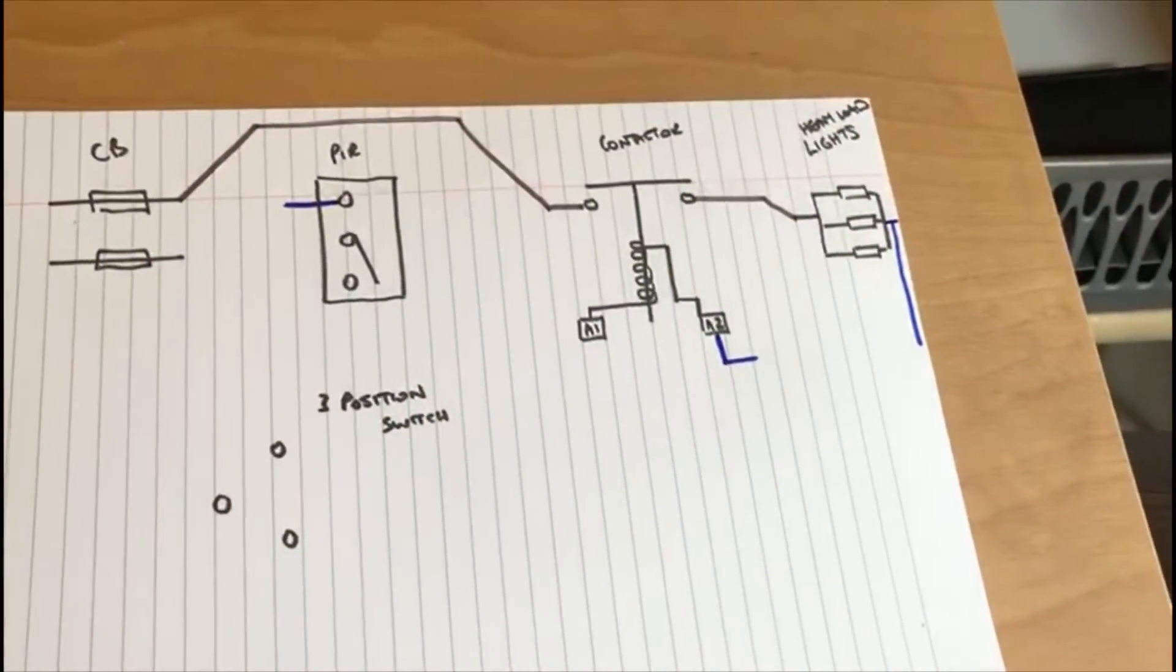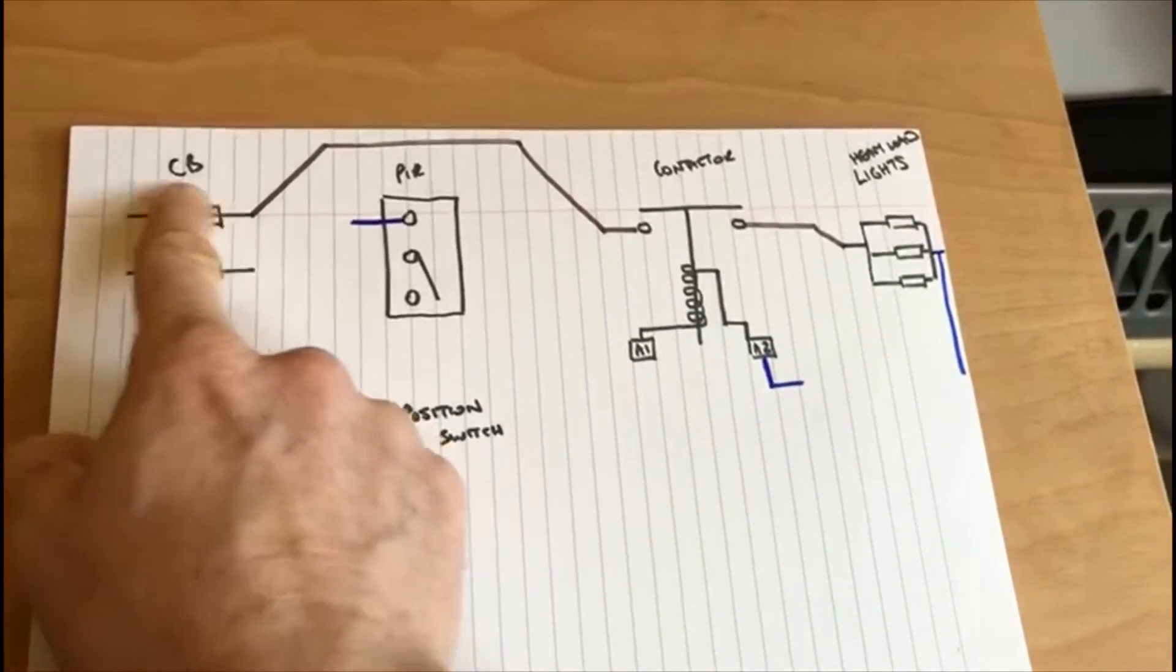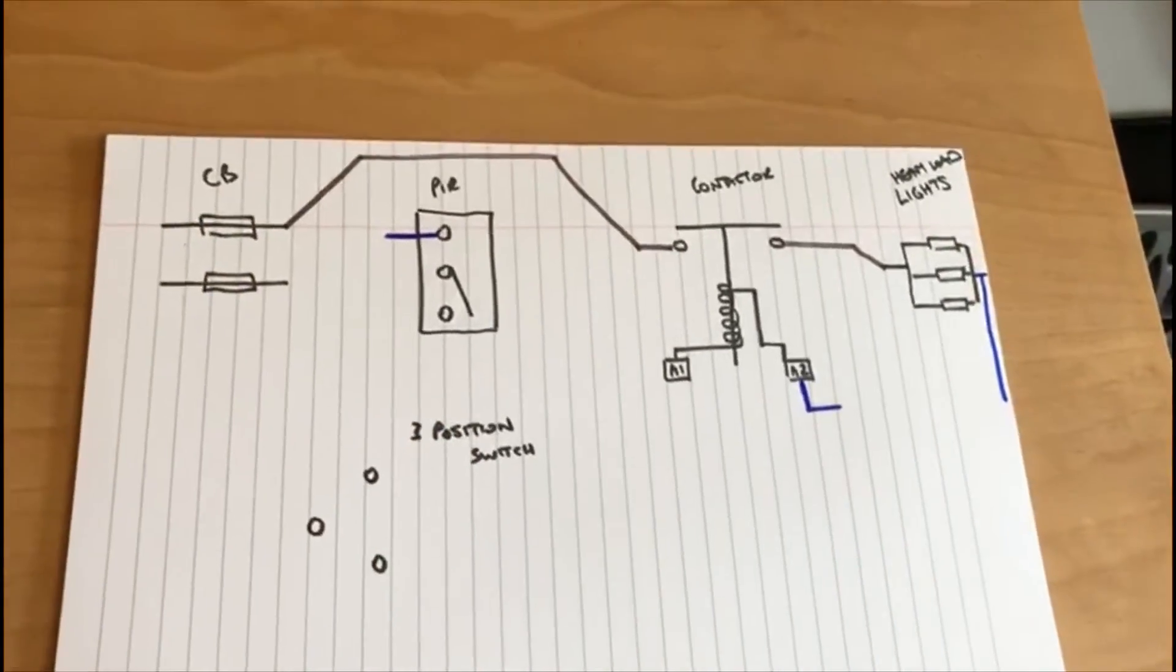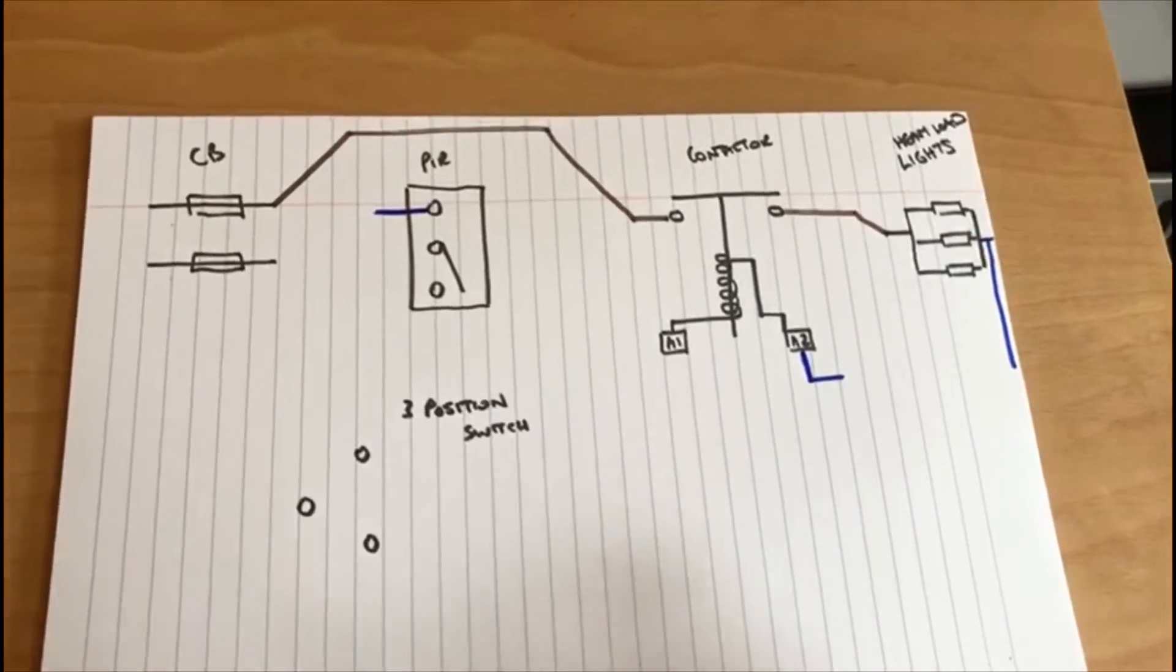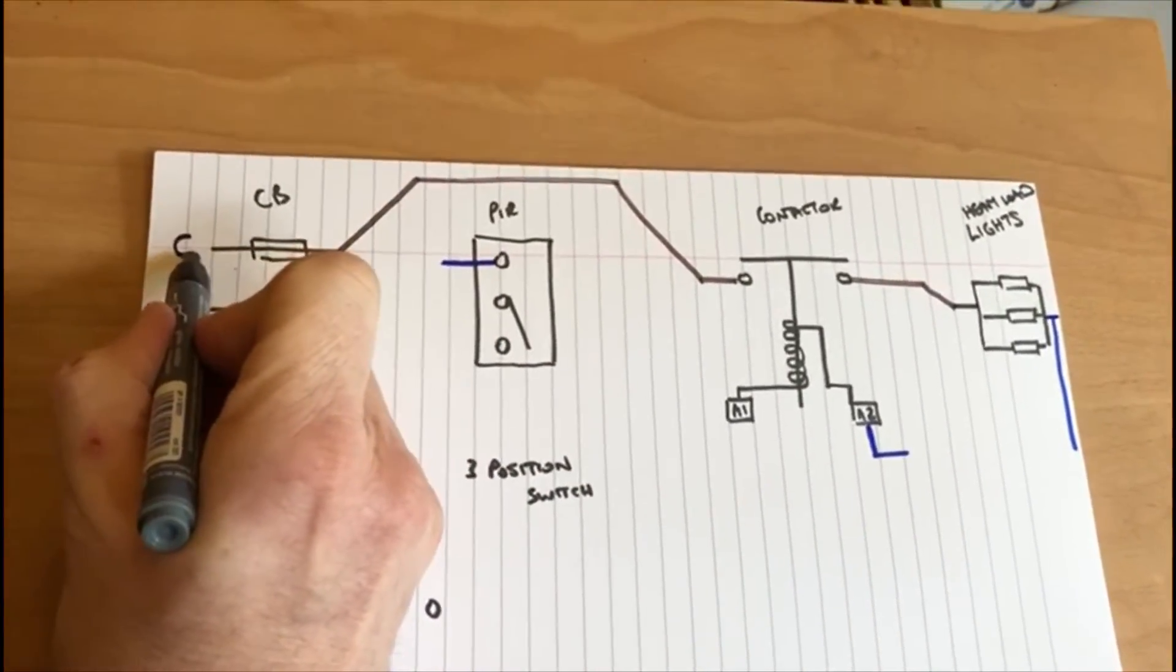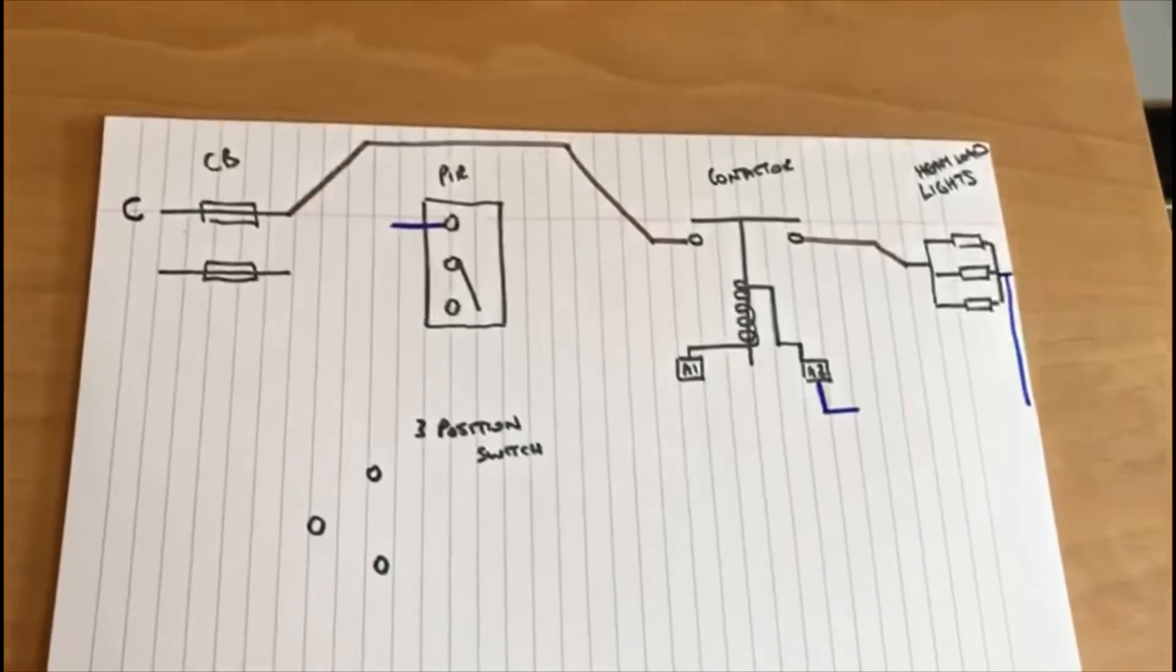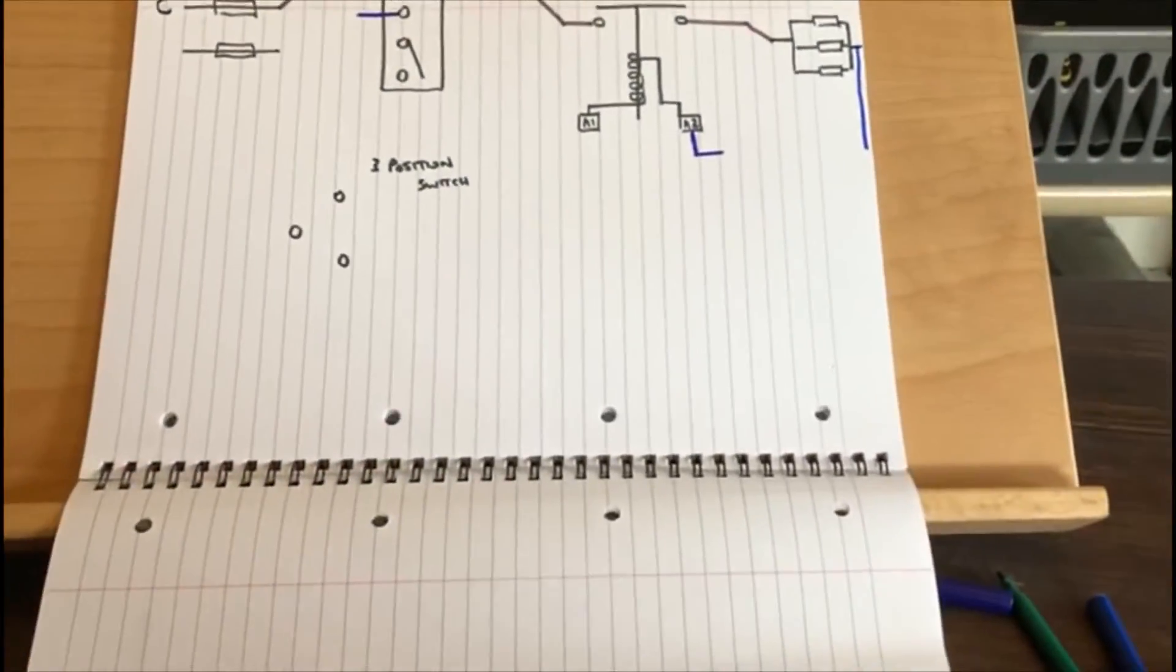In this case then it would need to be a slightly bigger circuit breaker and the right size contactor as well. So this one could be, we might need it to be a C type circuit breaker. Now the rest of the circuit diagram is now very similar to the one previously.